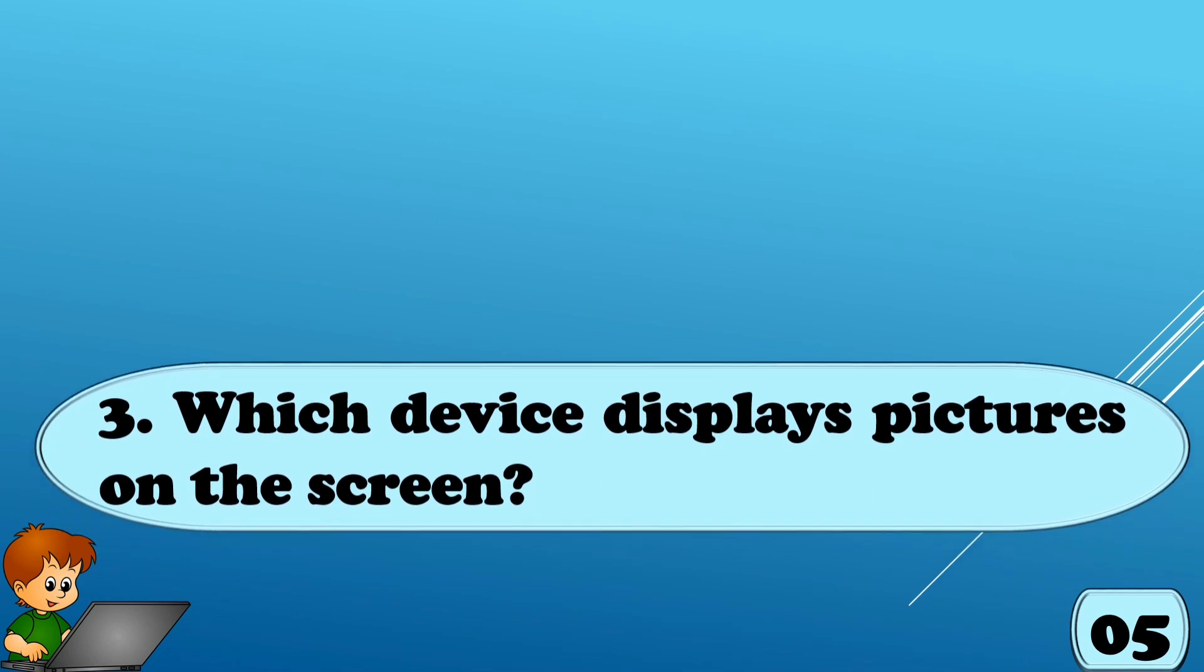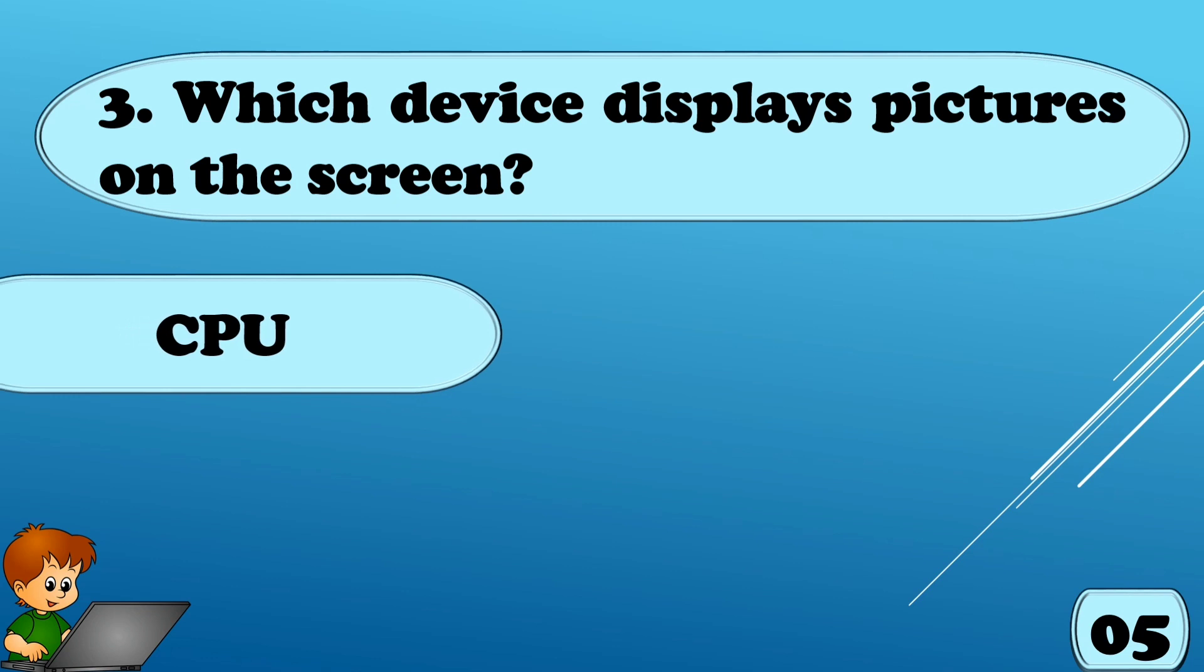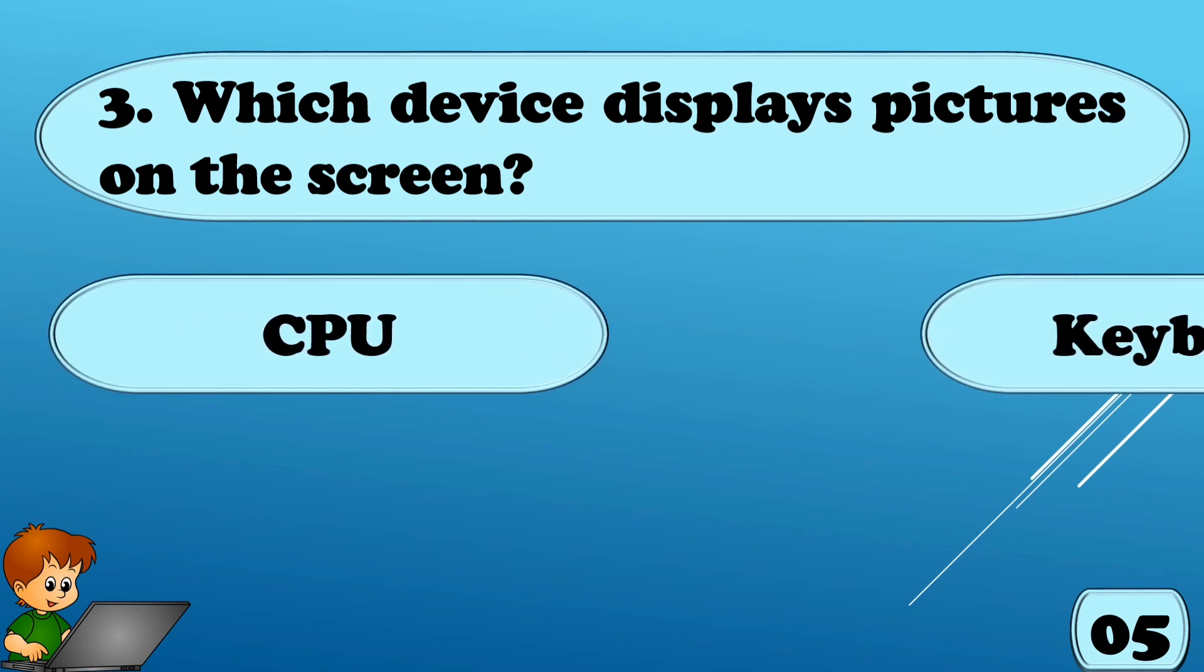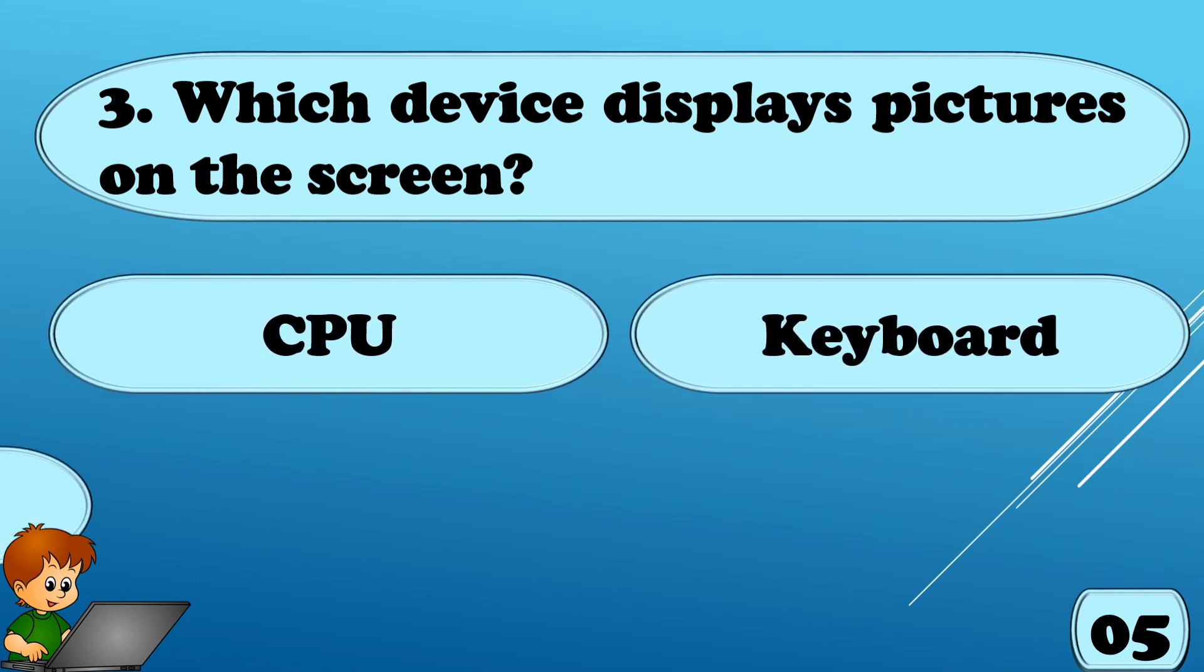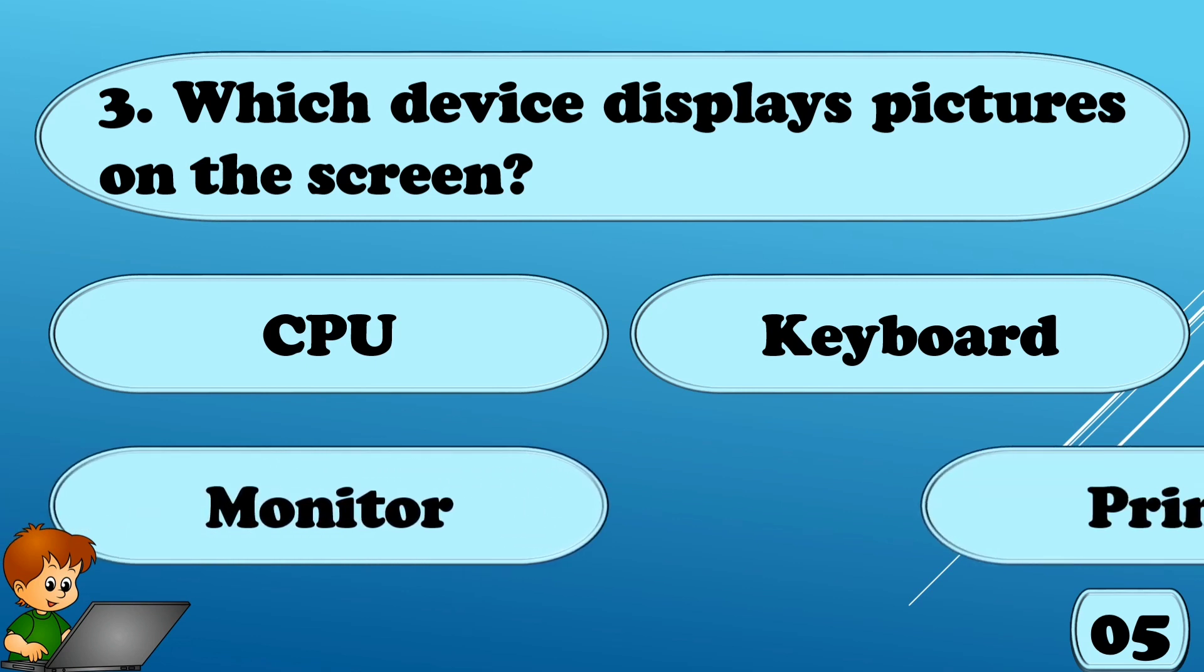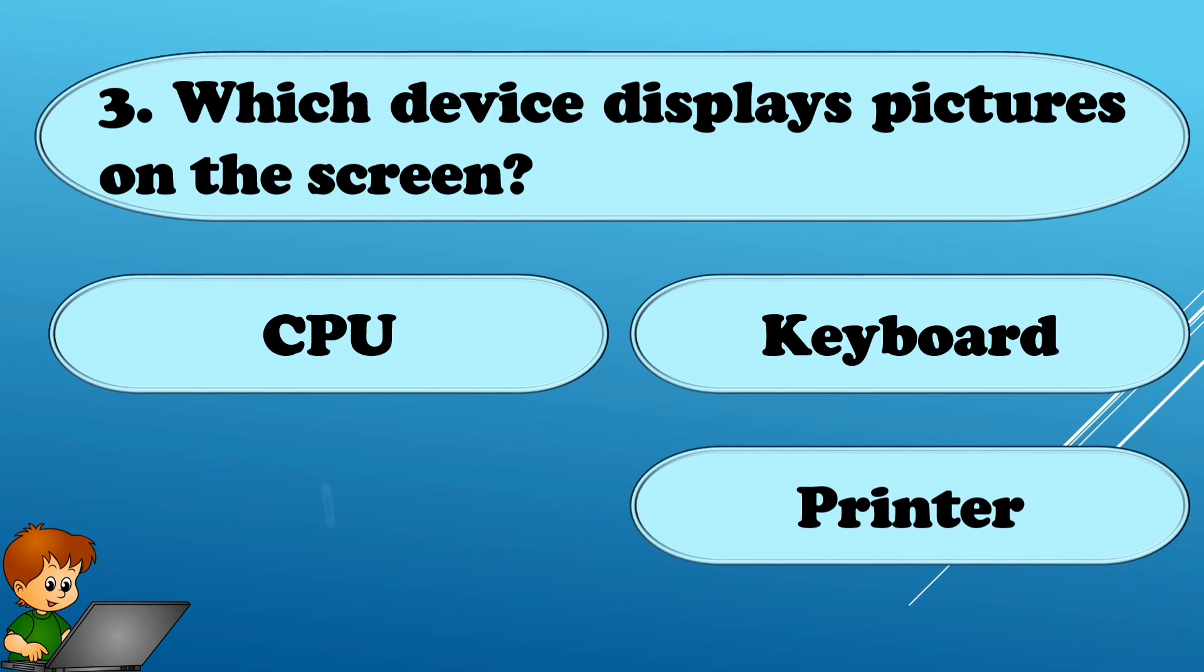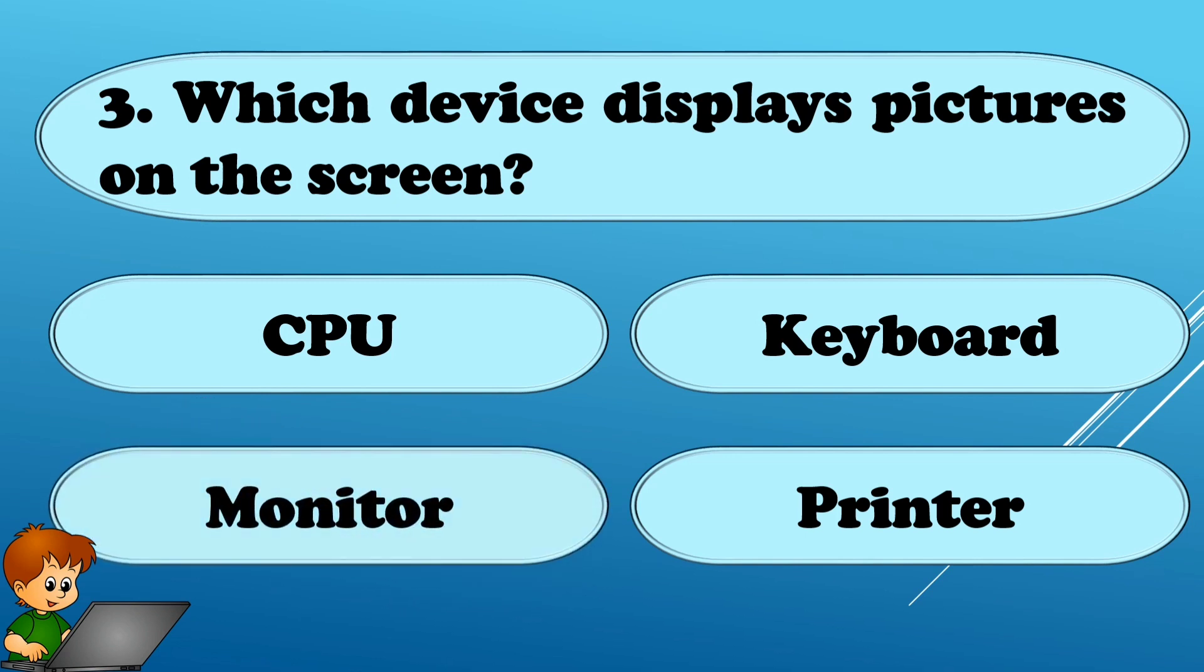Which device displays pictures on the screen? Options are A. CPU, Option B. Keyboard, Option C. Monitor, or Option D. Printer. The correct answer is Monitor.